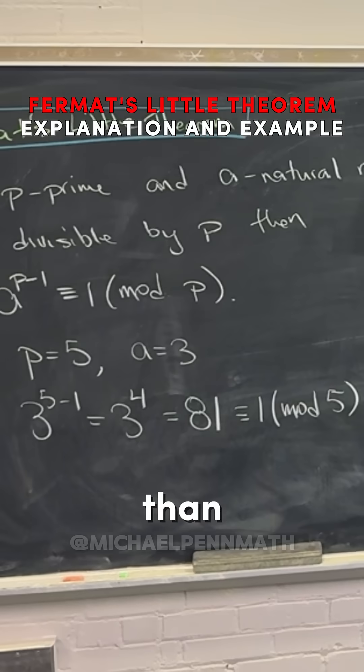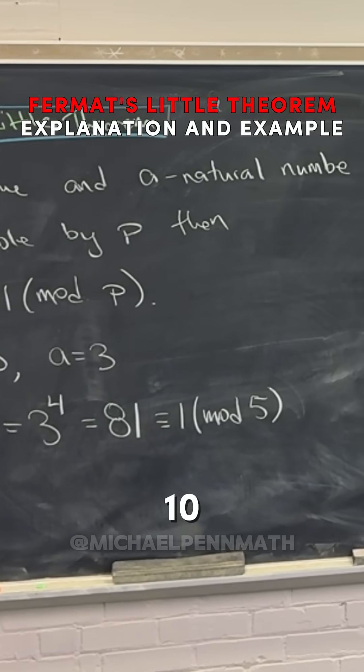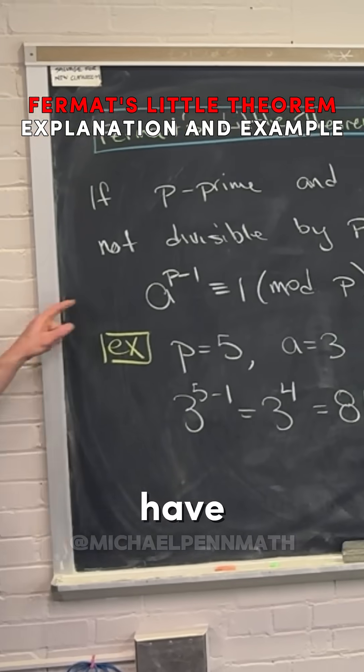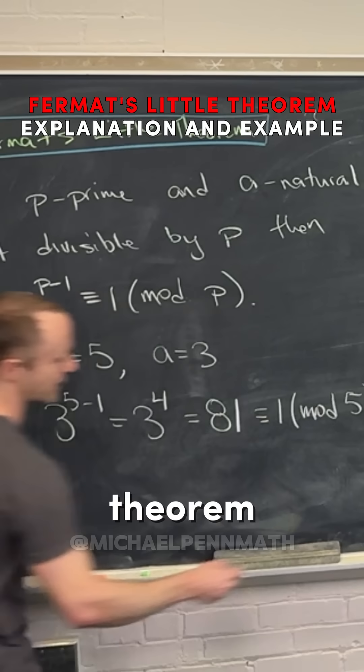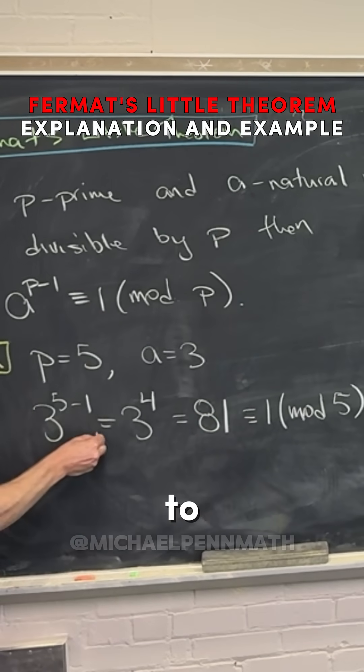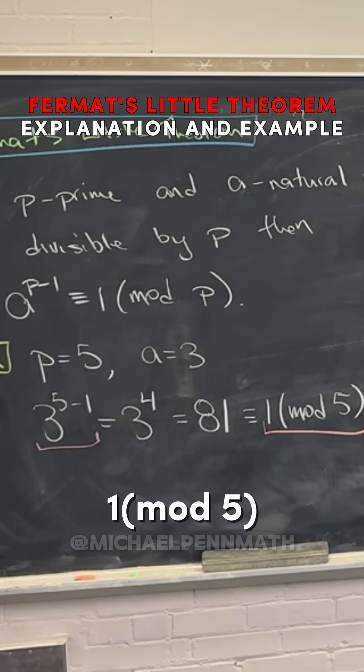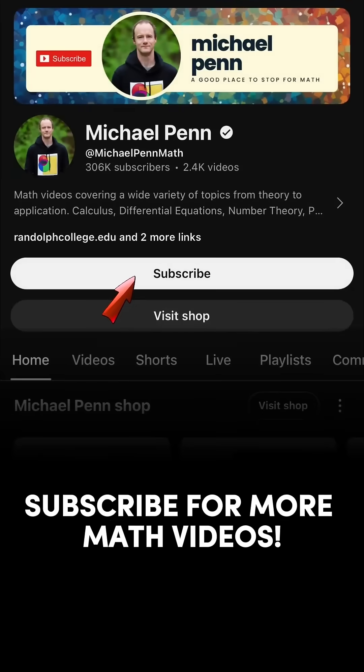And that's actually obvious because it ends in a 1, right? That's one more than something divisible by 10, which is inherently divisible by 5. So we have an example of Fermat's Little Theorem working - we took something to the power prime minus 1 and got 1 mod 5.